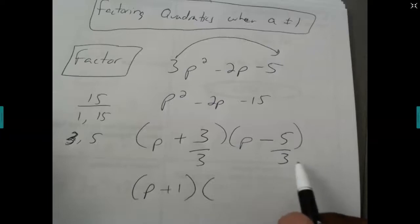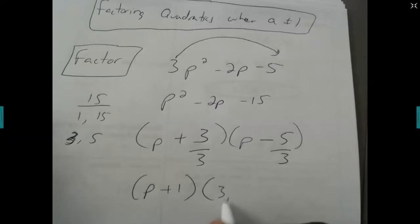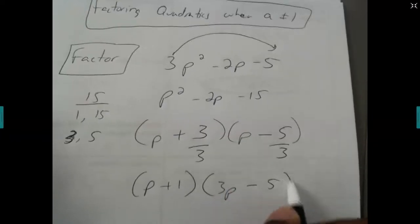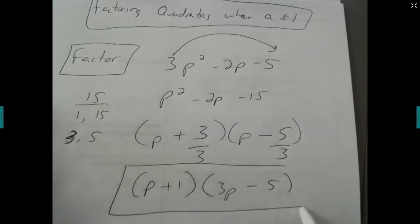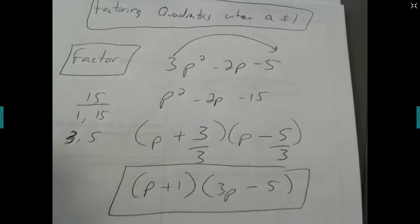5 over 3 does not reduce. So this 3 comes bottoms up. It comes up in front of the p. It becomes 3p. The subtraction sign comes down, and the 5 comes down. And now we've factored that polynomial to be this. And that's how it works.